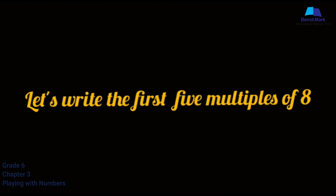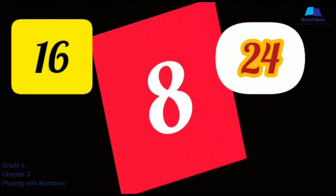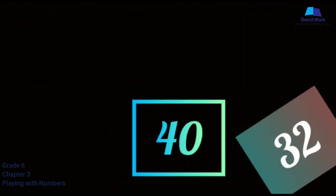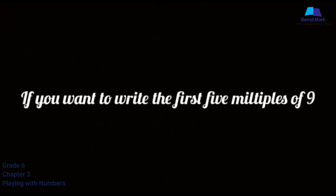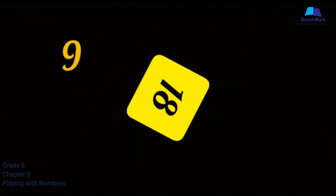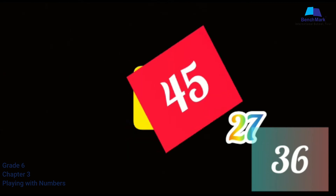Let's write the first 5 multiples of 8: they are 8, 16, 24, 32, and 40. If you want to write the first 5 multiples of 9, they are 9, 18, 27, 36, and 45.